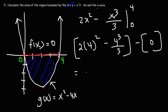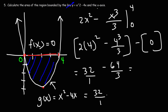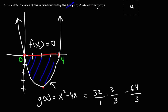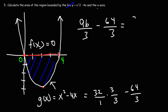Plugging in 4: 2 times 16 minus 64 over 3 equals 32 minus 64 over 3. Getting a common denominator: 96 over 3 minus 64 over 3 equals 32 over 3. So the area of the shaded region is 32 over 3 square units.